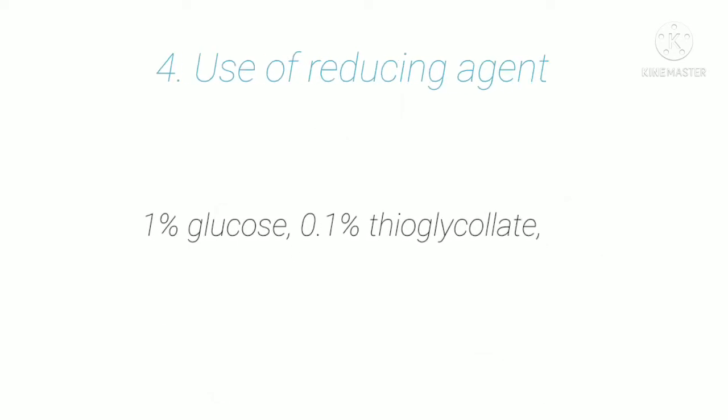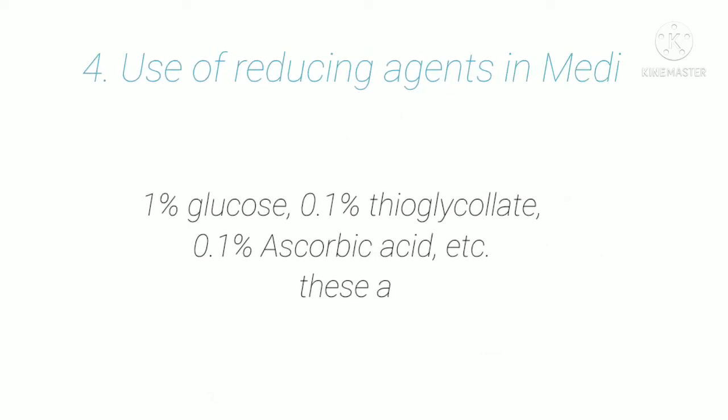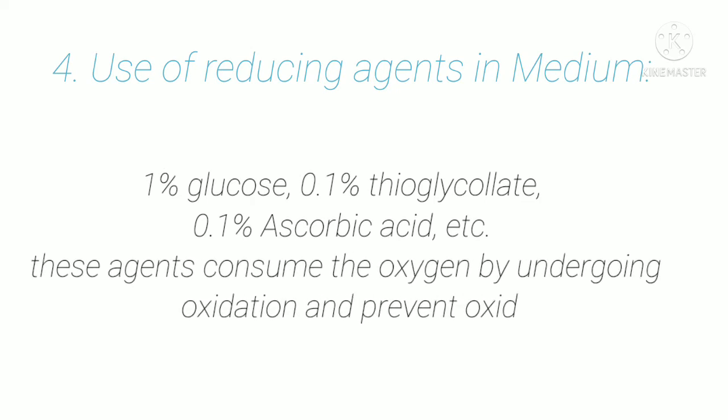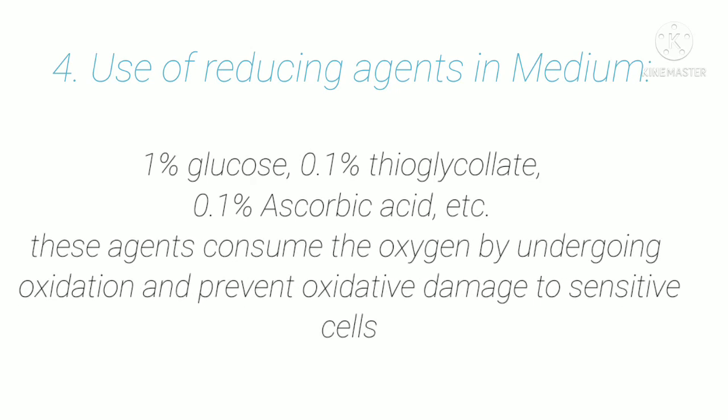The fourth method is the use of reducing agents: 1% glucose, 0.1% thioglycolate, and 0.1% ascorbic acid. These agents consume oxygen by undergoing oxidation themselves, and prevent oxidative damage to sensitive cells.